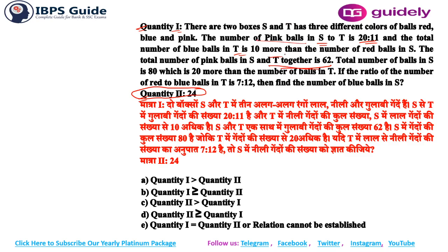This should ring a bell in your mind — you get a key insight from combining these two statements. The total number of balls in S is 80, which is 20 more than the number of balls in T. When we combine these two statements we can definitely get the balls in both boxes. Total balls in S is 80, which is 20 more than balls in T.